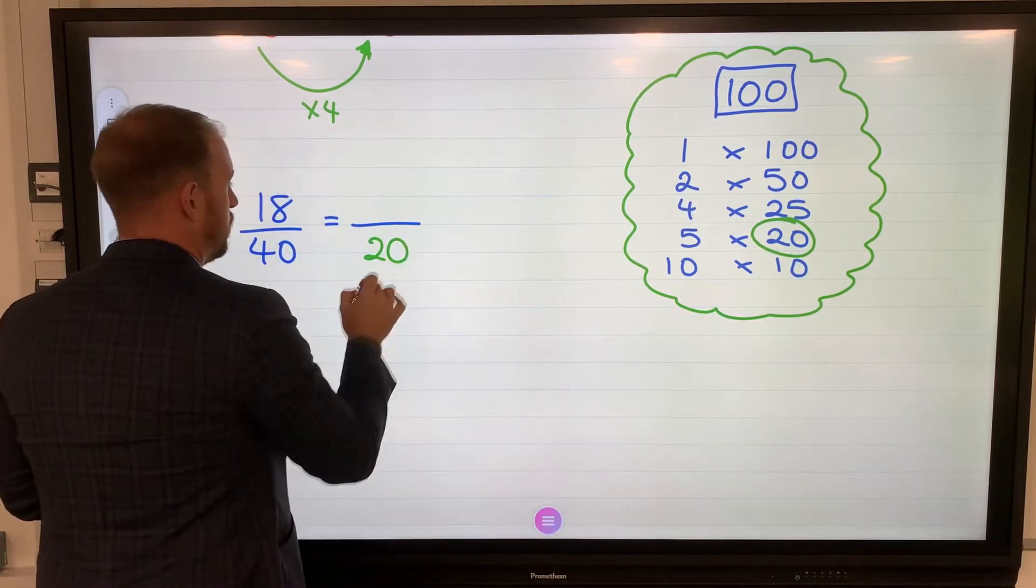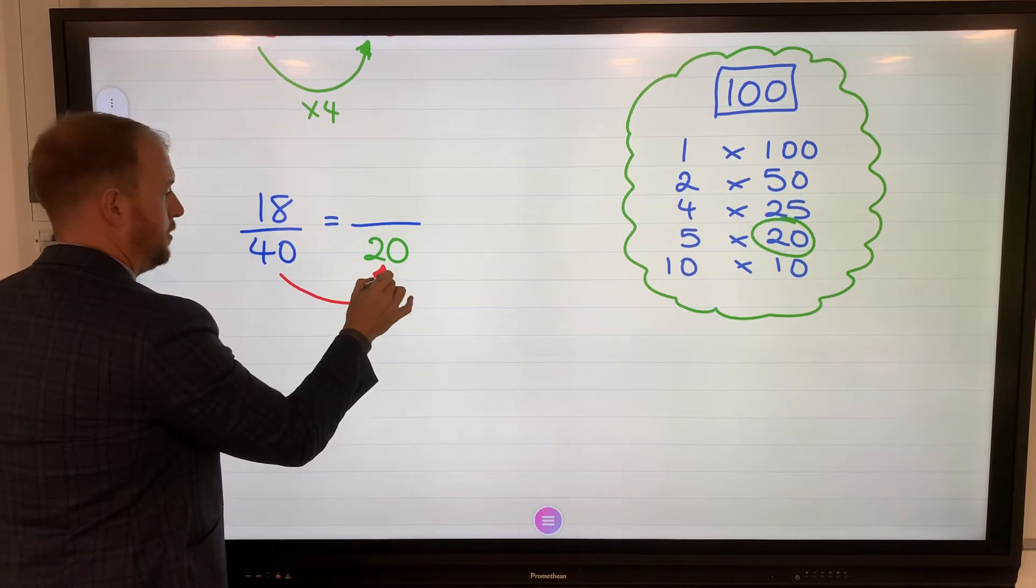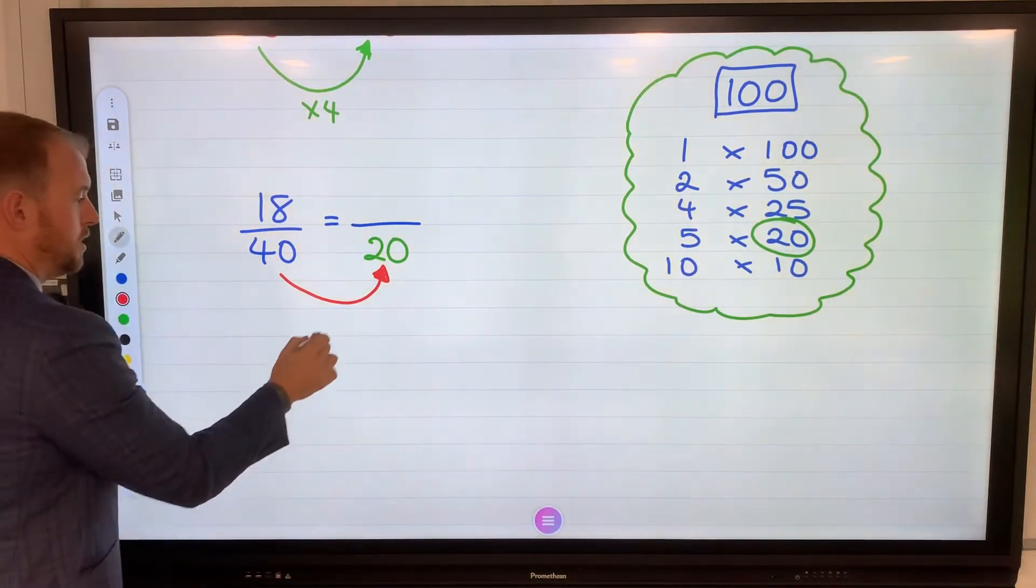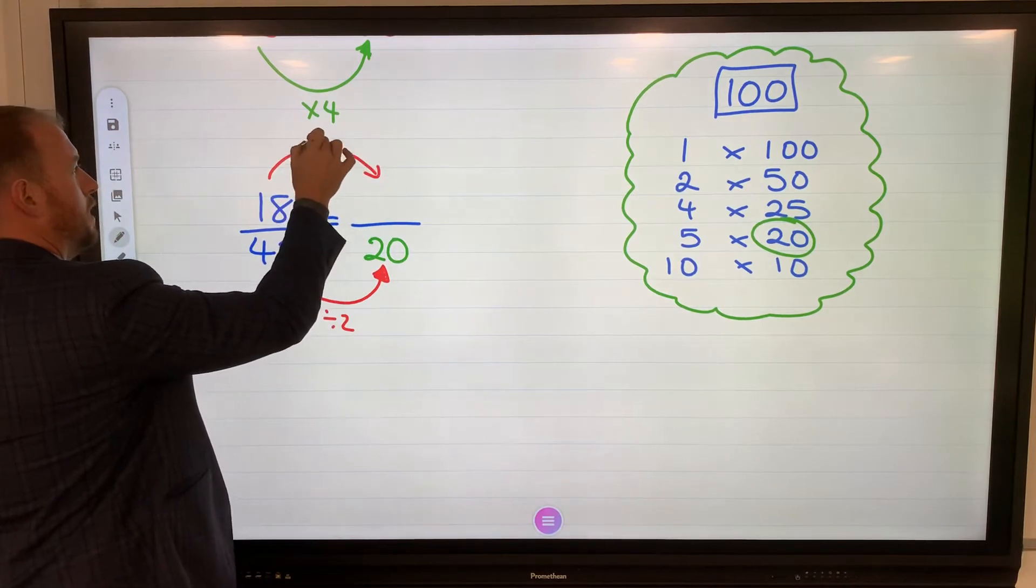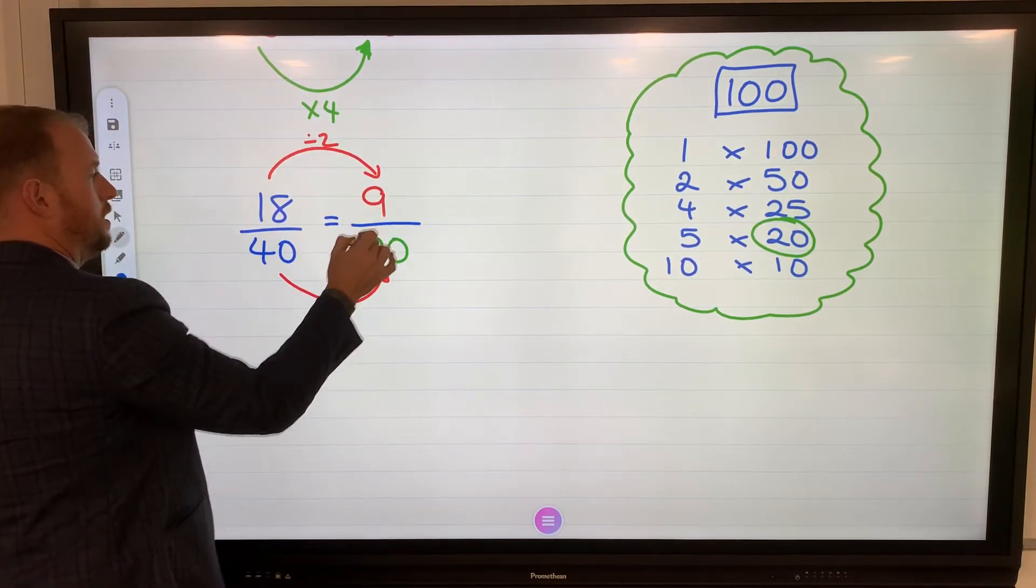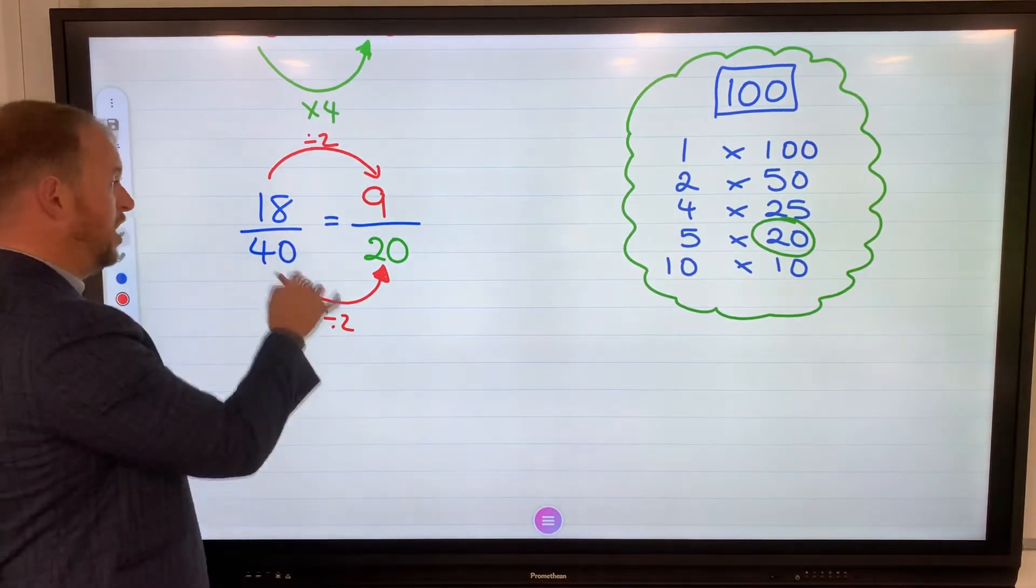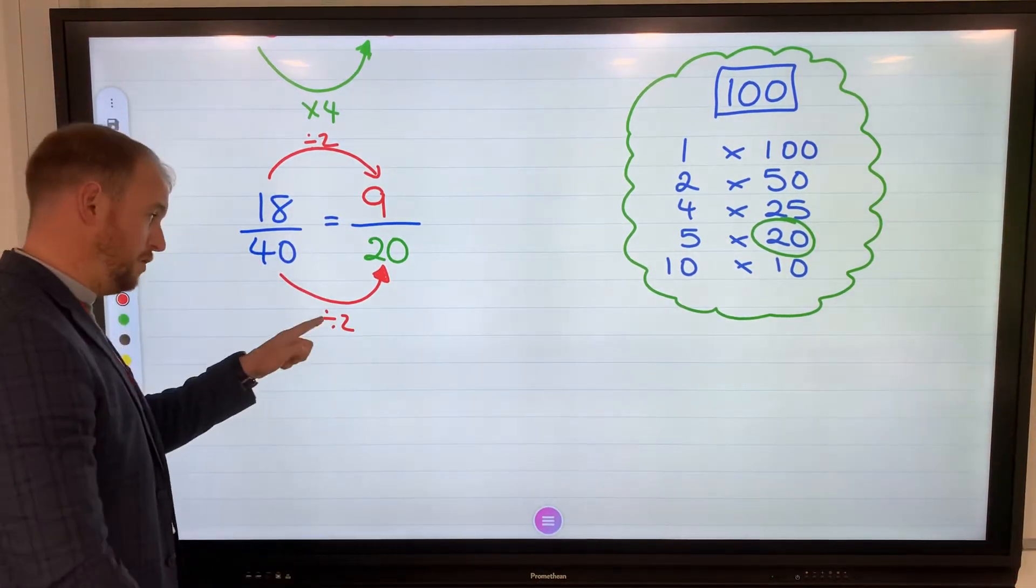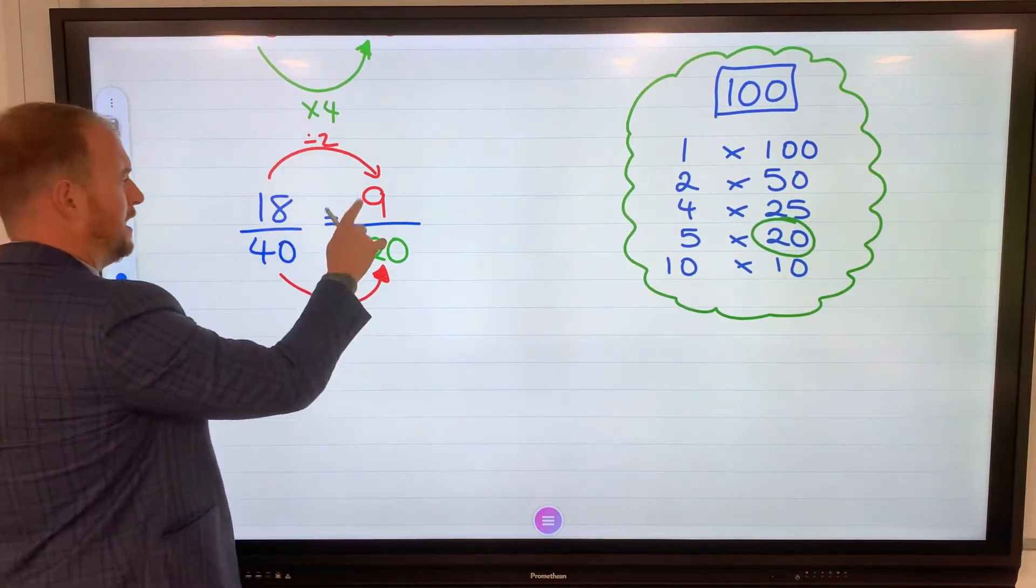I'm going to make that out of 20, because there's a direct relationship to get from 40 to 20, which is to divide by 2. I'll do the same to the top. Divided by 2 is then 9. Equivalent fractions, I call it the burger method, looks a bit like a burger. Whatever you do to the bottom, got to do the same to the top.